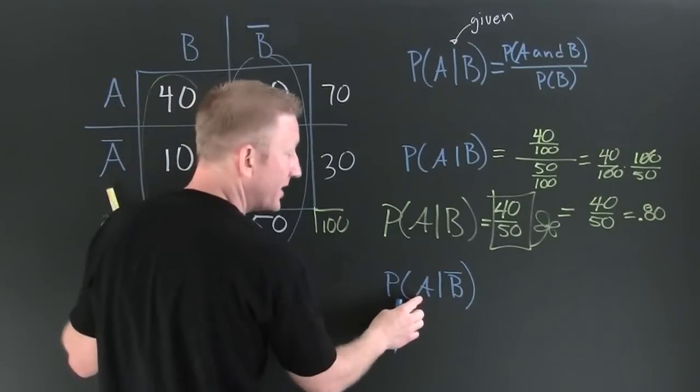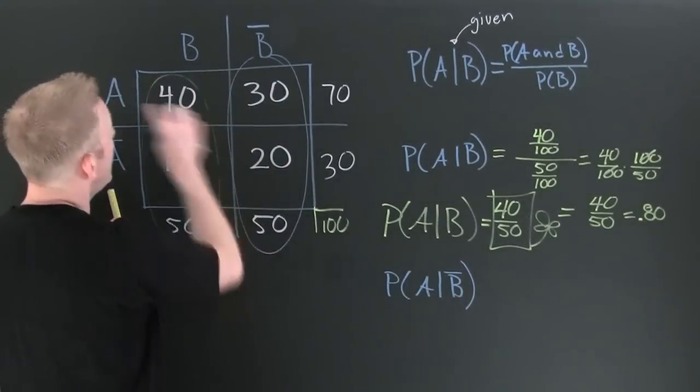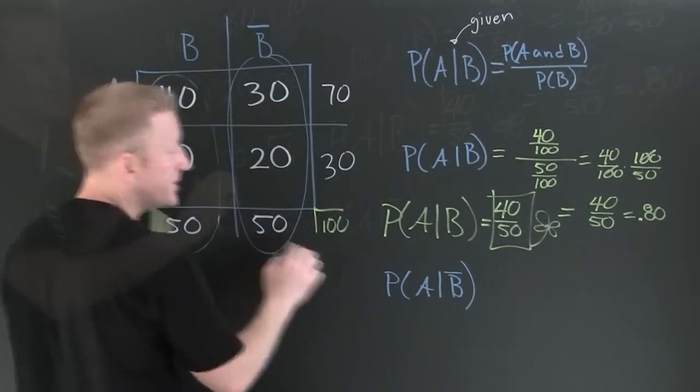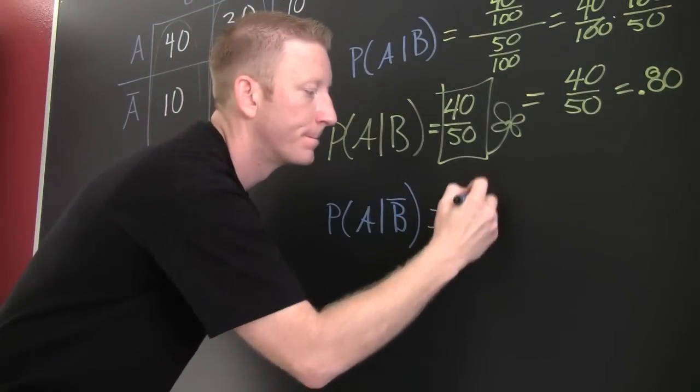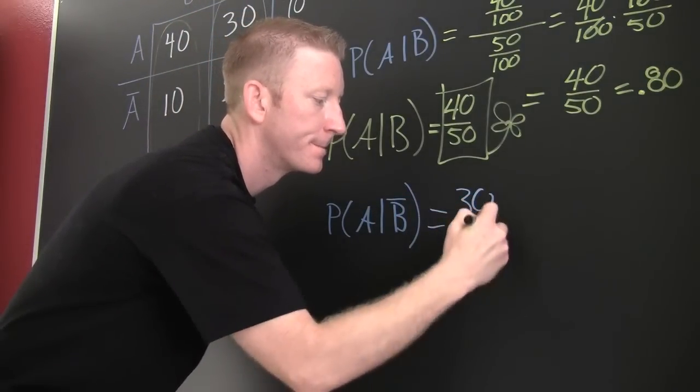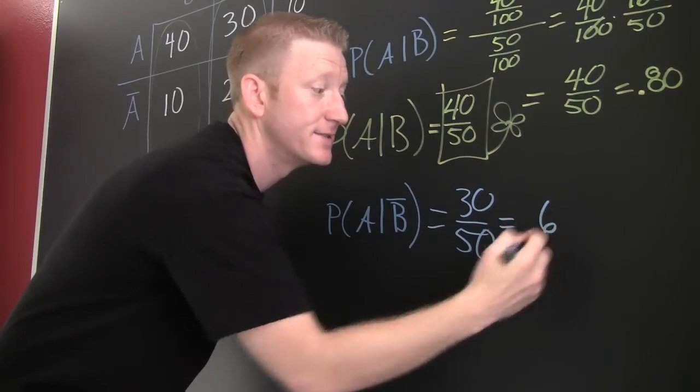So then what is the probability of A given not B has happened? So A is 30 out of 50, which is 0.6.